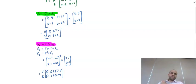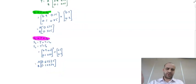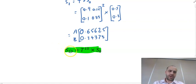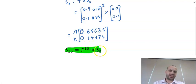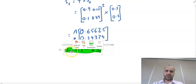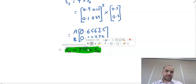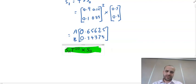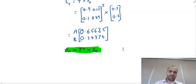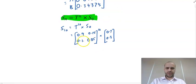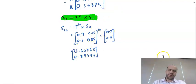It looks like the Aardvarks are losing a share of fans. Let's see what happens after an extremely long period of time. In general, SN — the state after N years — equals the transition matrix to the power of N times the initial state matrix. For 10 years, we'd do T to the power of 10 times the initial state vector.